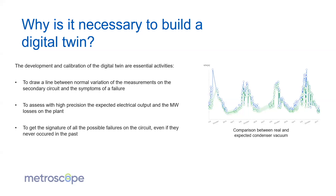But the digital twin is the key element in Metroscope's added value. The development and calibration of the digital twin to match the power plant is really what draws the line between normal variation of measurements and the symptom of a failure. Here on the right, the first output of Metroscope: in blue you have the actual measurement of the plant, and in green the expected behavior computed by our digital twin. You can see that, for instance, at the very beginning there is a gap between the measurement and the expected value, and Metroscope is able to analyze these gaps across multiple sensors and go back to the root cause.